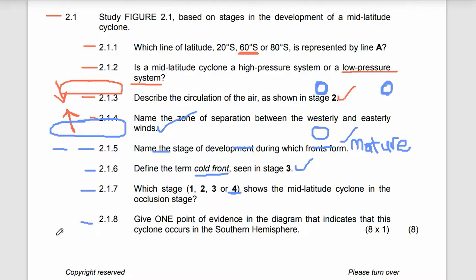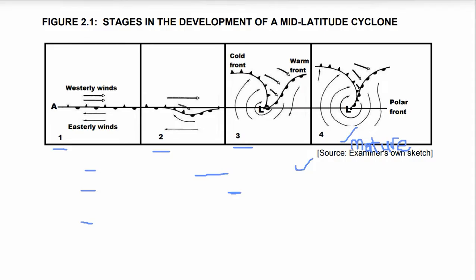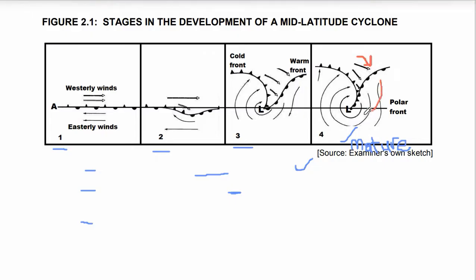Question 2.1.8 says: give one point of evidence in the diagram that indicates that this cyclone occurs in the southern hemisphere. The mid-latitude cyclone is rotating in a clockwise direction — clockwise direction, like a clock. That's why it's in the southern hemisphere. If it were in the northern hemisphere, it would rotate in an anticlockwise direction. This proves it's occurring in the southern hemisphere — it's rotating in a clockwise direction.